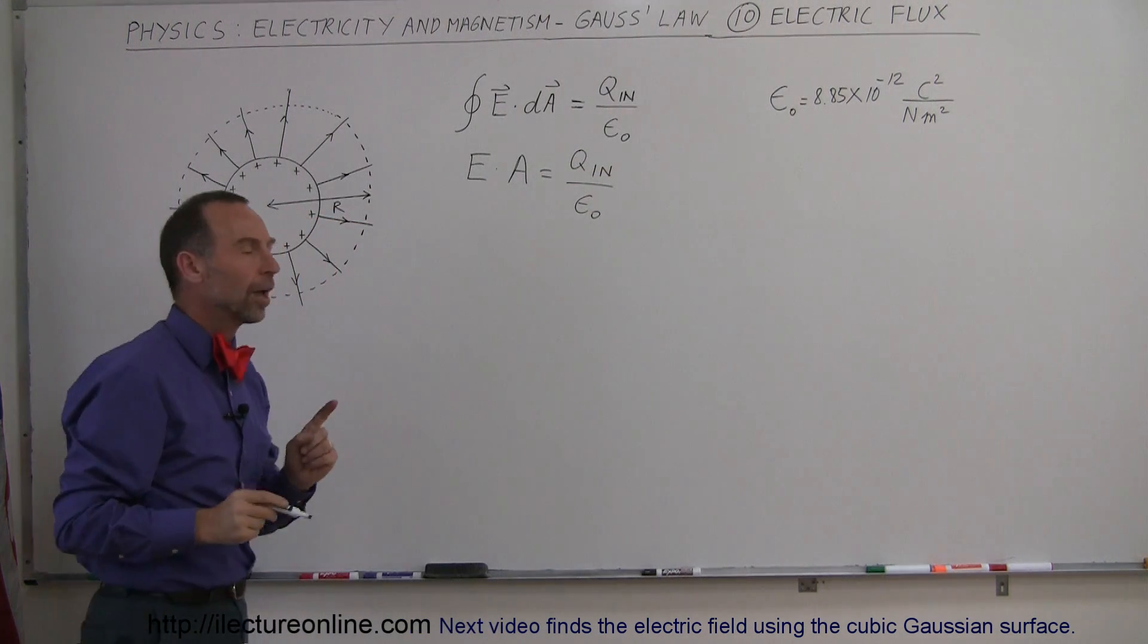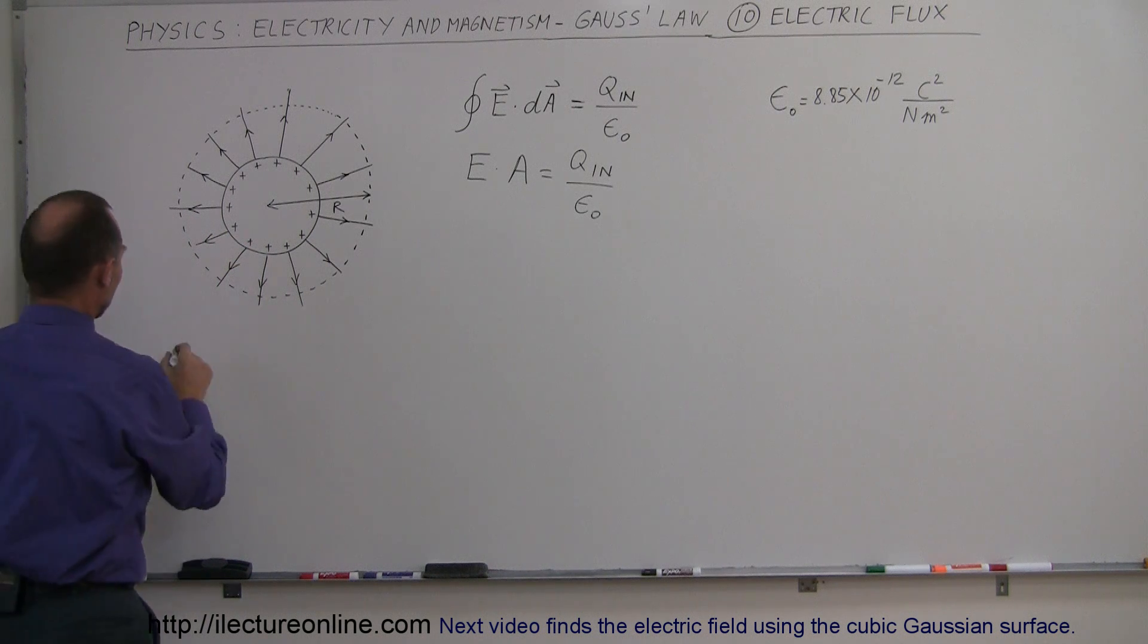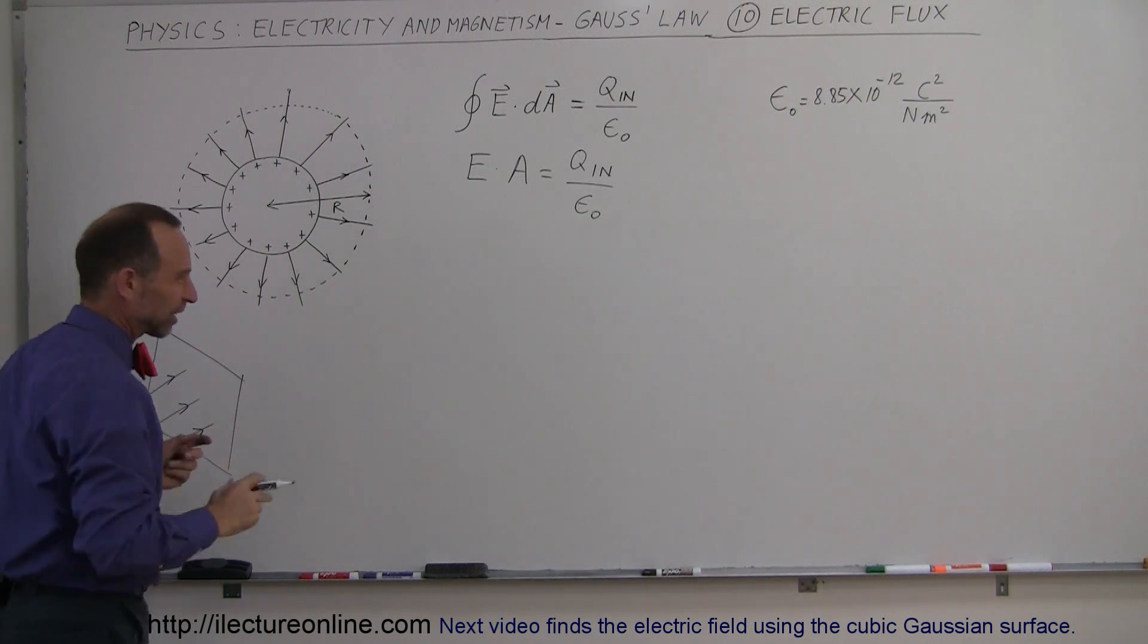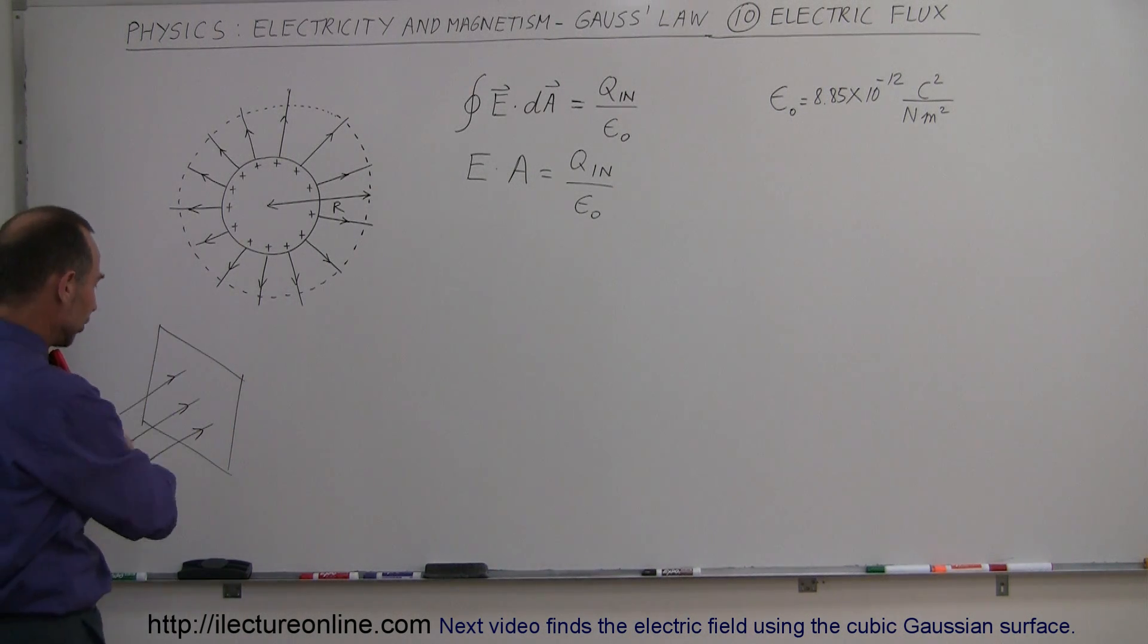Now, it also turns out that if we have, for example, a surface, and we have electric field going through the surface, and the electric field emanates from positive and negative charges, but if the electric field is present where that surface is...